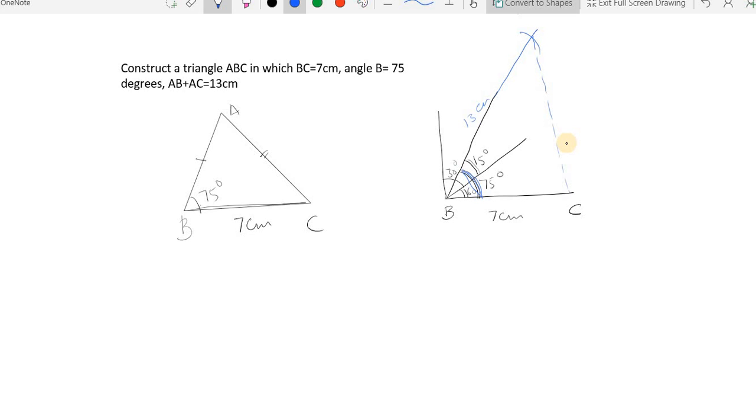Then what you need to do is draw a perpendicular line through this level. Let's take this as some point D. So DC, draw a perpendicular bisector. I hope you know how to draw a perpendicular bisector.